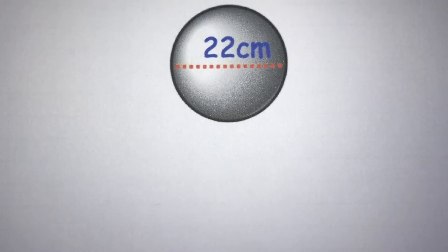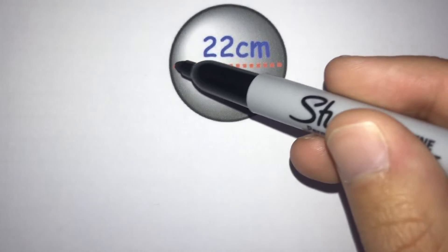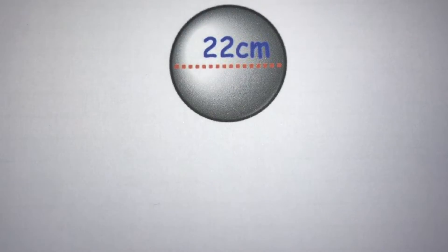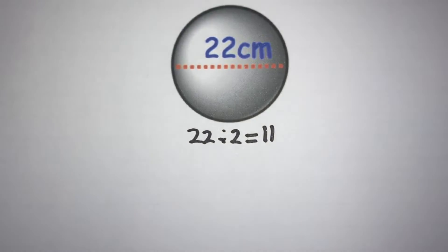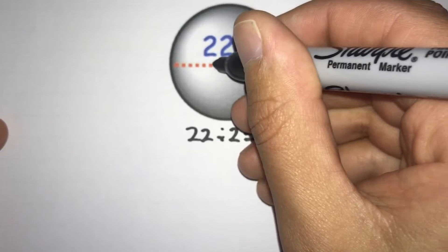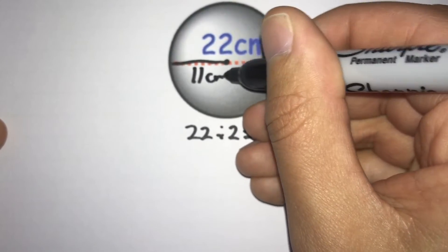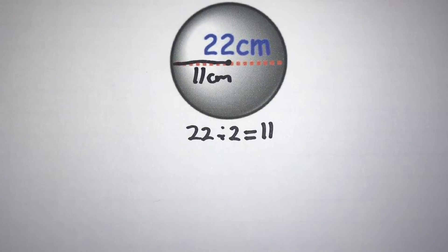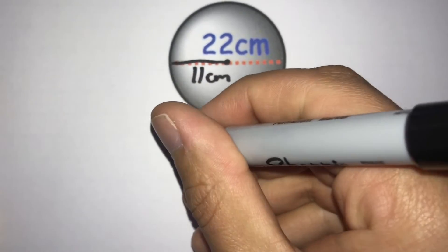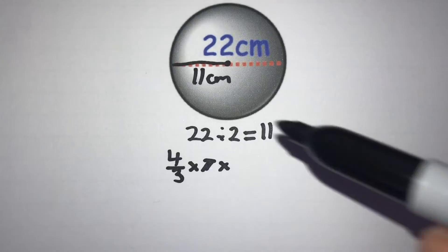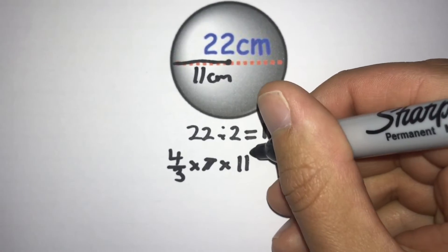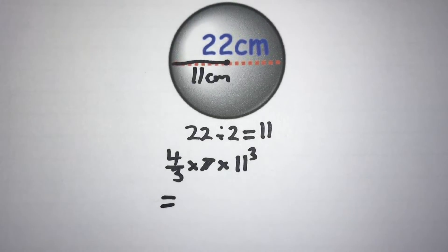In this next example, the 22 centimetre measurement goes all the way across the sphere, so we have the diameter, not the radius. To get the radius we divide 22 by 2, which gives us 11. So the radius — halfway from the centre to the edge — is 11 centimetres. That's the number we plug into our formula: (4/3) × π × 11³.